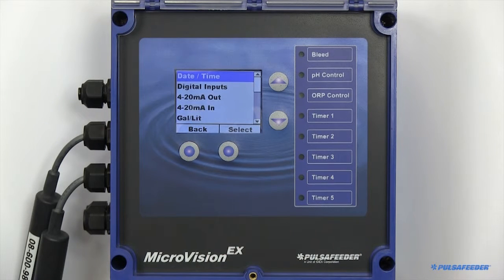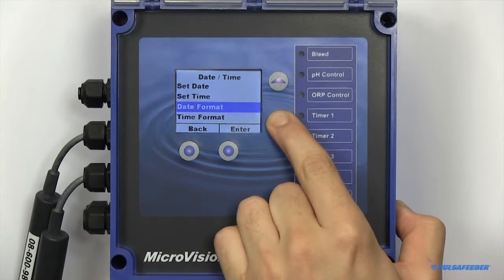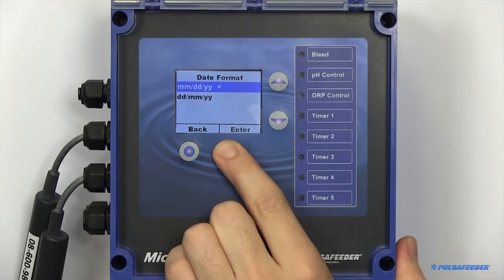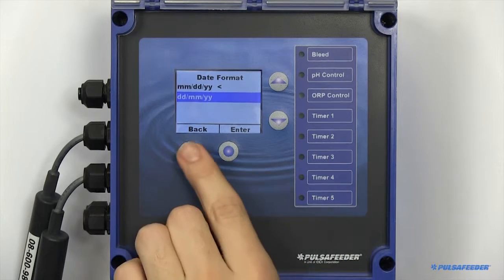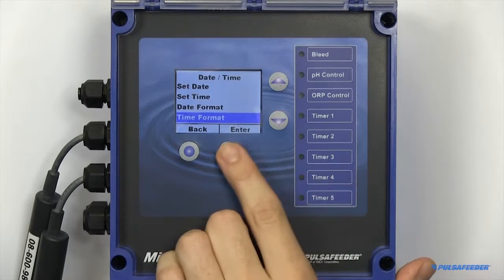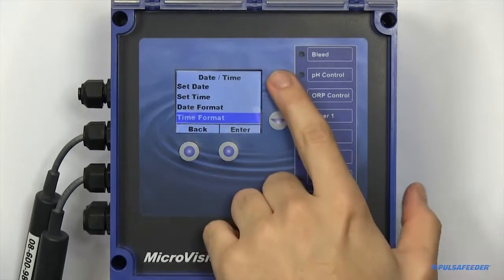In addition to being able to set your date and your time, you can also adjust the format they are displayed in. The date can be in month, day, year, or day, month, year. The time can also be configured in 12 hour or 24 hour mode.